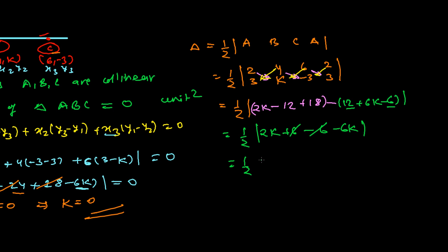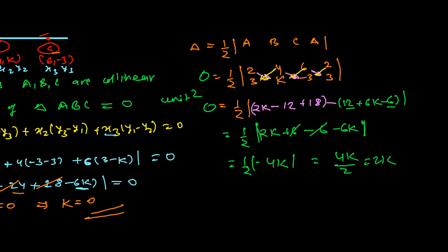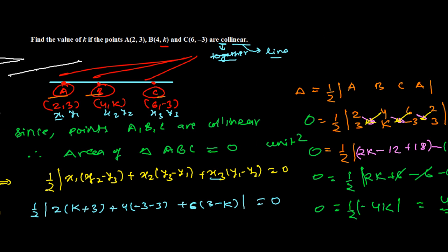Taking the absolute value, the area is one-half times 4k = 2k. Since the area equals zero, we get 2k = 0, giving us k = 0. So the value of k is 0 by the shortcut method as well.